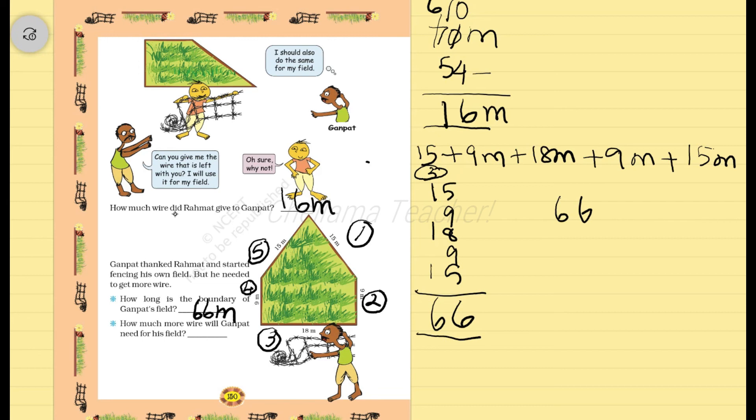We can subtract from the requirement. So 66 is to be subtracted. 6 minus 6 is 0. 6 minus 1 is 5. So 50 meter. How much more wire will Ganpag need for his field? The answer is 50 meter.